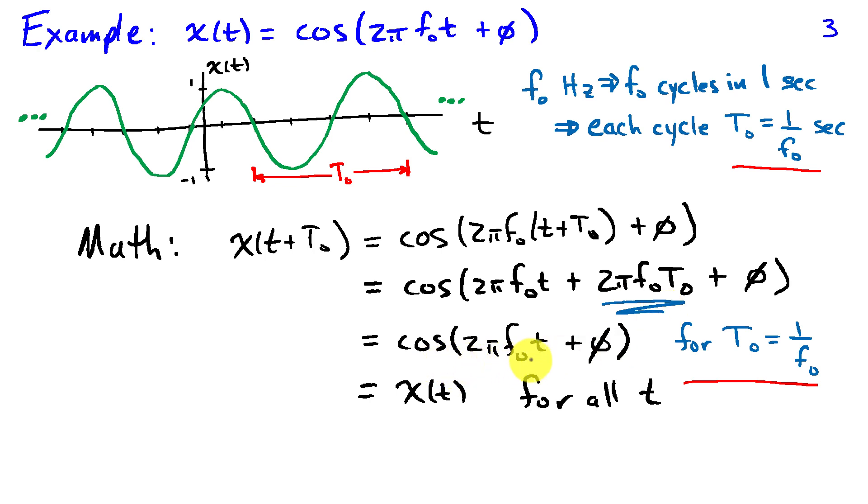And write this as cosine 2 pi f naught t plus phi and that is exactly x of t and this holds for all values of t. So provided I choose t naught equal 1 over f naught, mathematically I've shown that this relationship x of t plus capital T naught is equal to x of t.